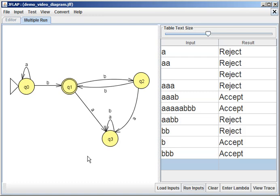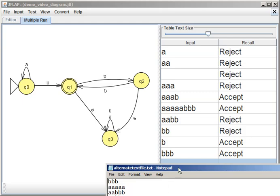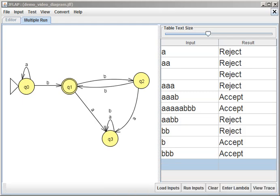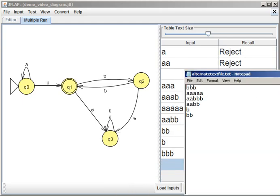We can also import a file and just test a whole bunch of things in a single file. So somewhere down here I have a text file. Here's one. My alternate text file, which has BBB, all these things in it.